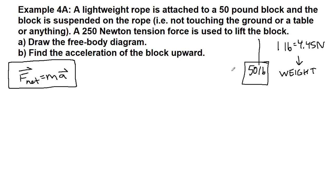It's suspended on this rope, so it's not touching the ground or a table. Right away, that tells us that there will not be a normal force. Normal means perpendicular, and it's perpendicular to a surface. There is not going to be a normal force if there is not a surface that we're touching. And a 250-newton tension force is used to lift the box.